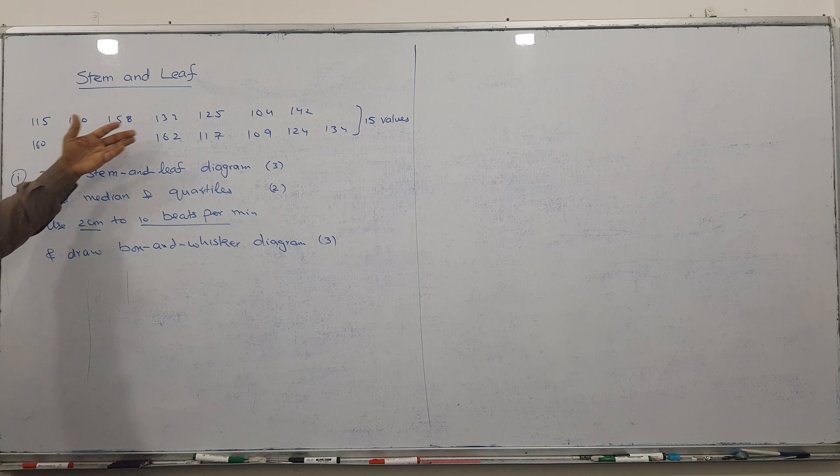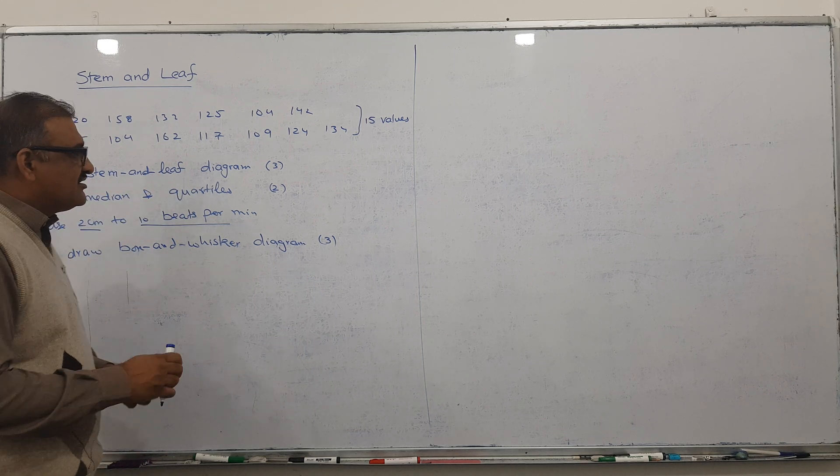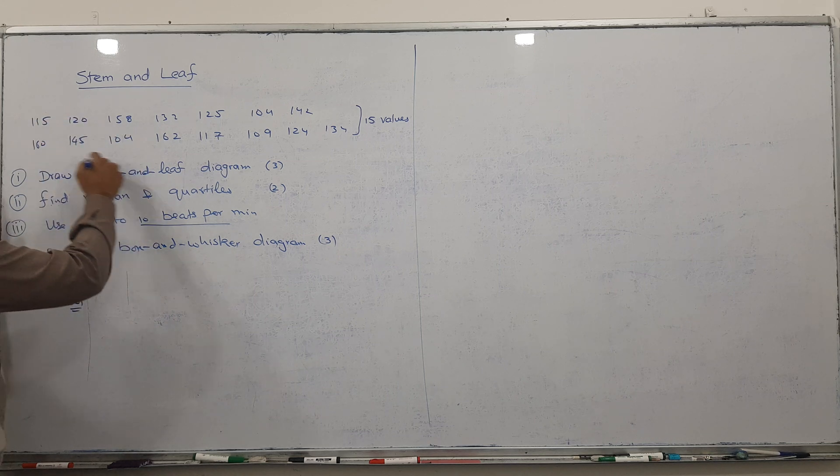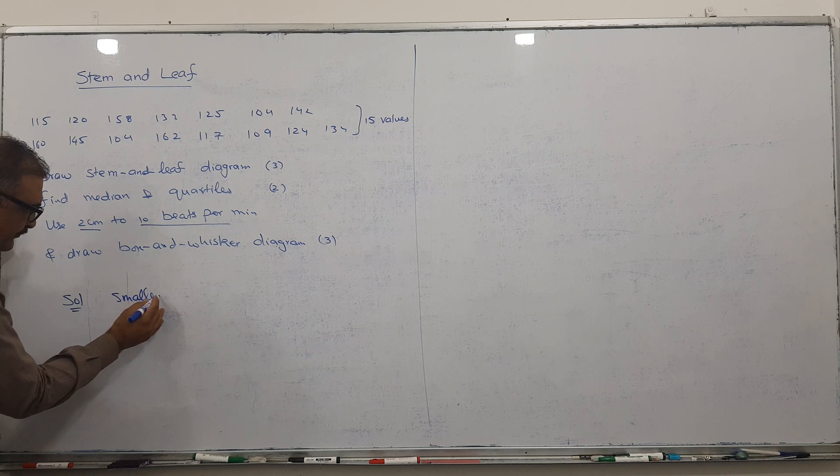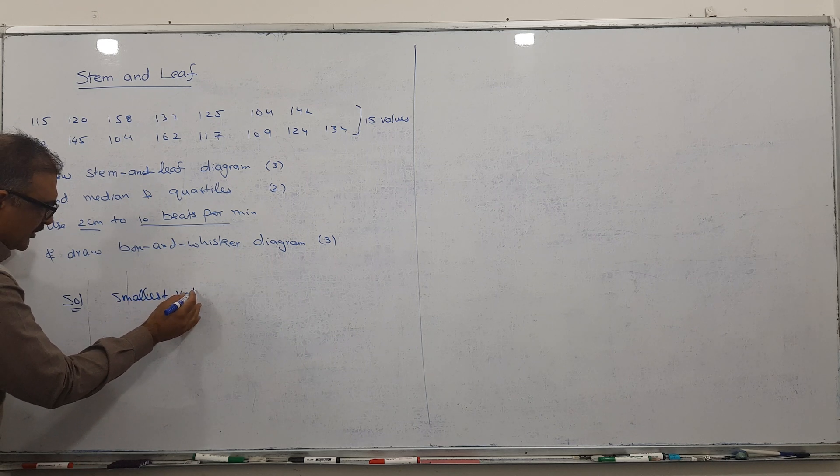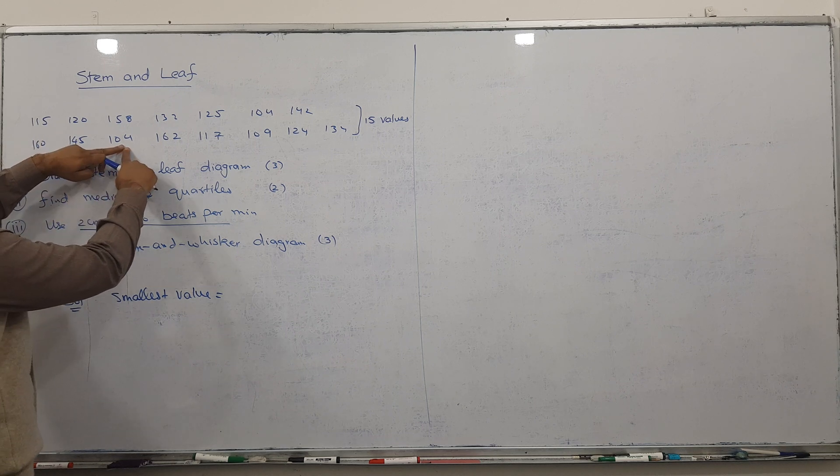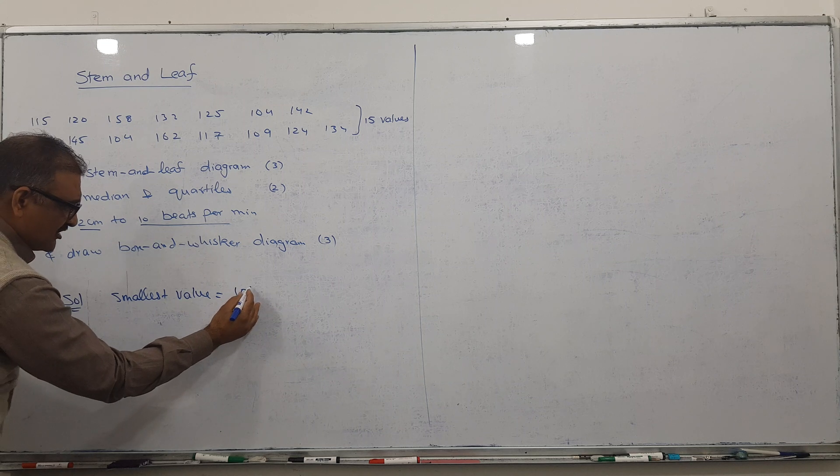What is the method? First of all, find the smallest value from here. The smallest value, if you look carefully, is 104 or 109, but 104 is the smallest value.